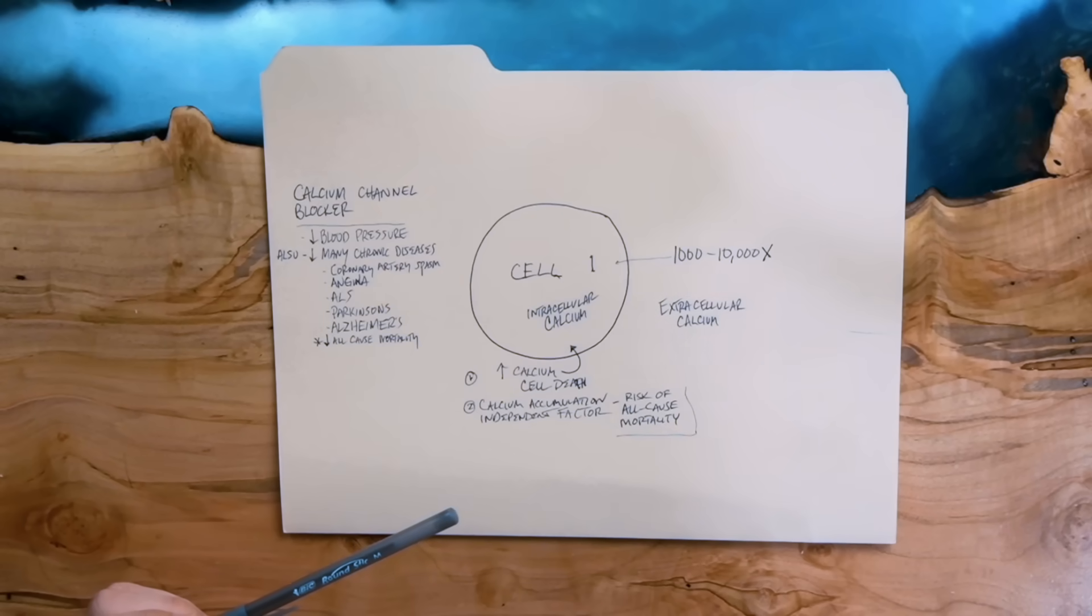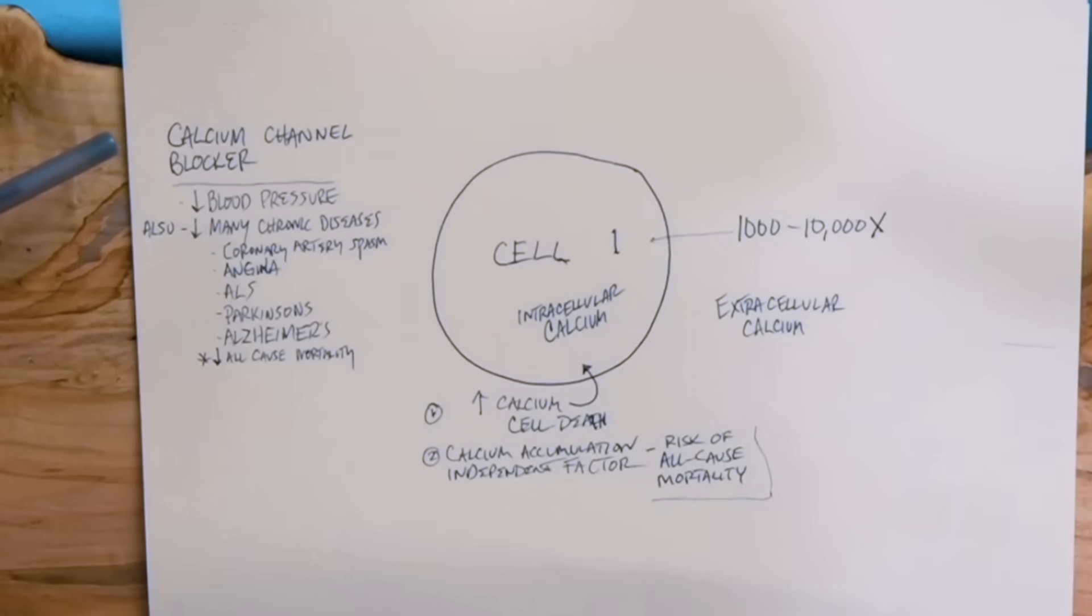Check out this next point. Calcium accumulation is an independent factor of risk of all-cause mortality. And check this out. People that are taking calcium channel blockers, normally you probably know they're taking it for high blood pressure. But did you know that it creates other effects?